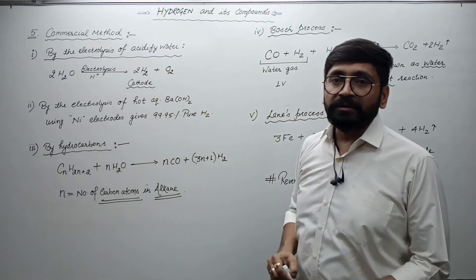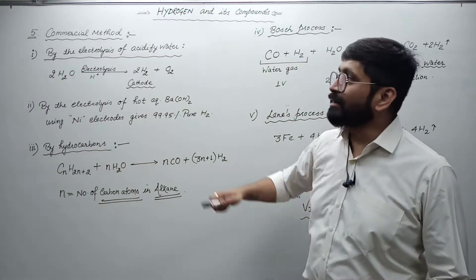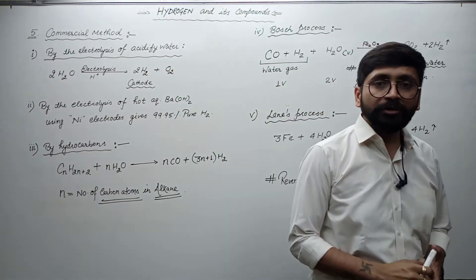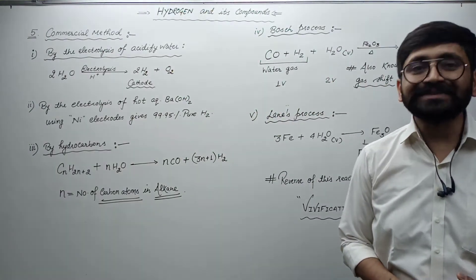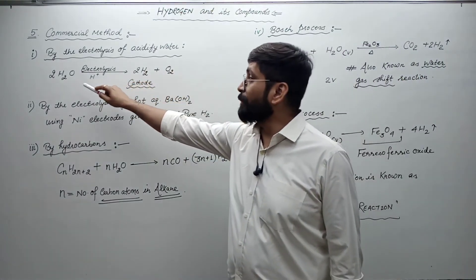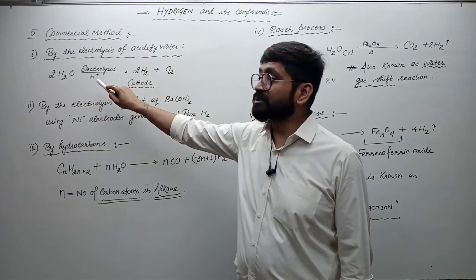In commercial method, we have many processes. Number 1 is by the electrolysis of acidified water. Acidified water means H3O plus ion. We have electrolysis, and we have written H plus ion.